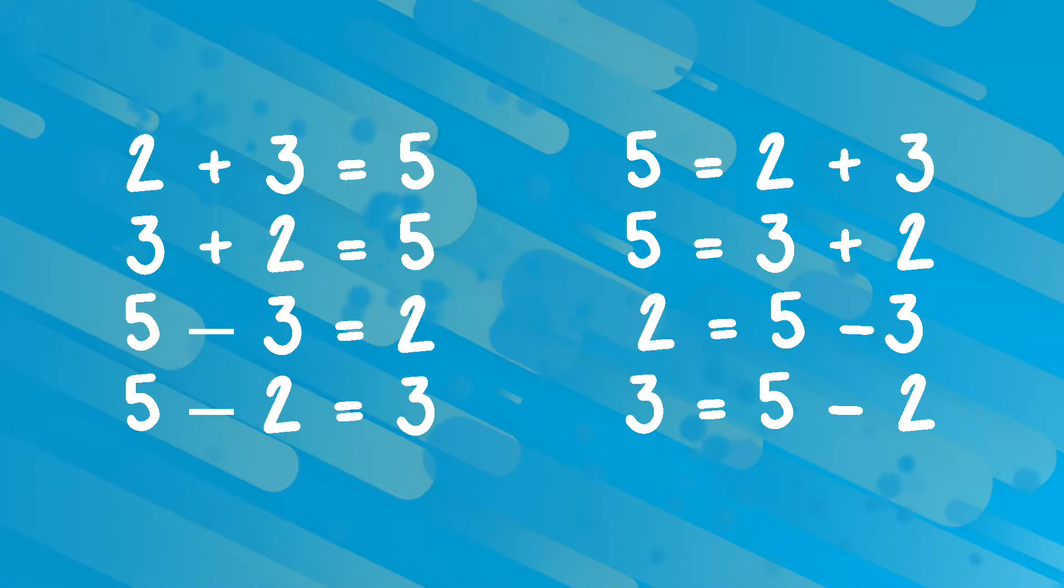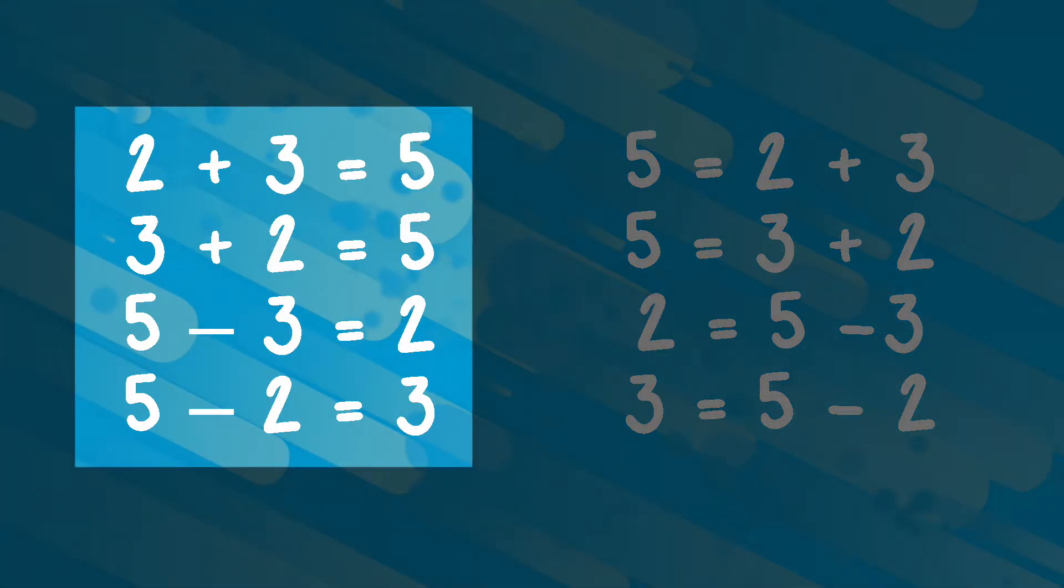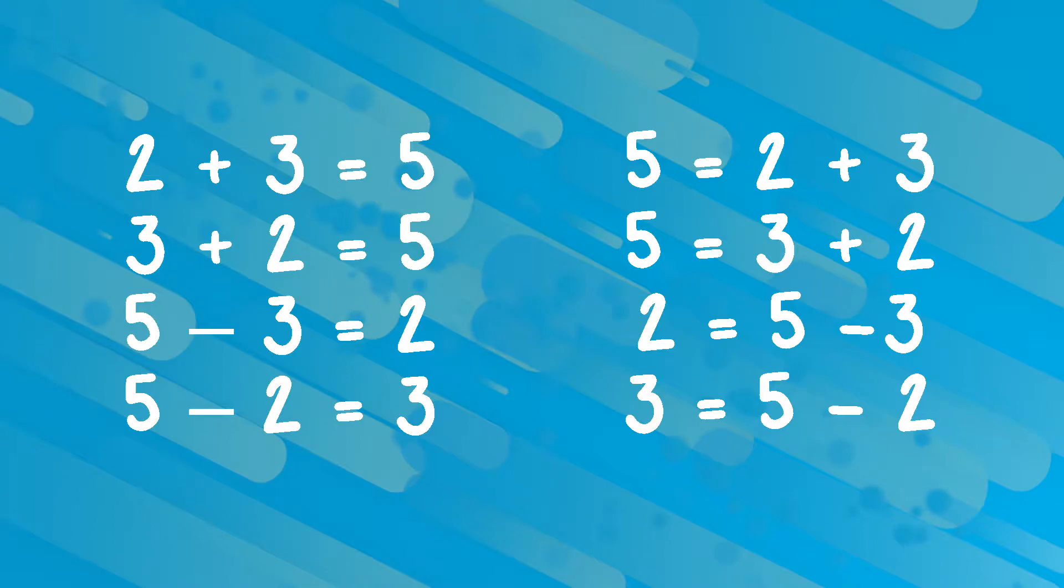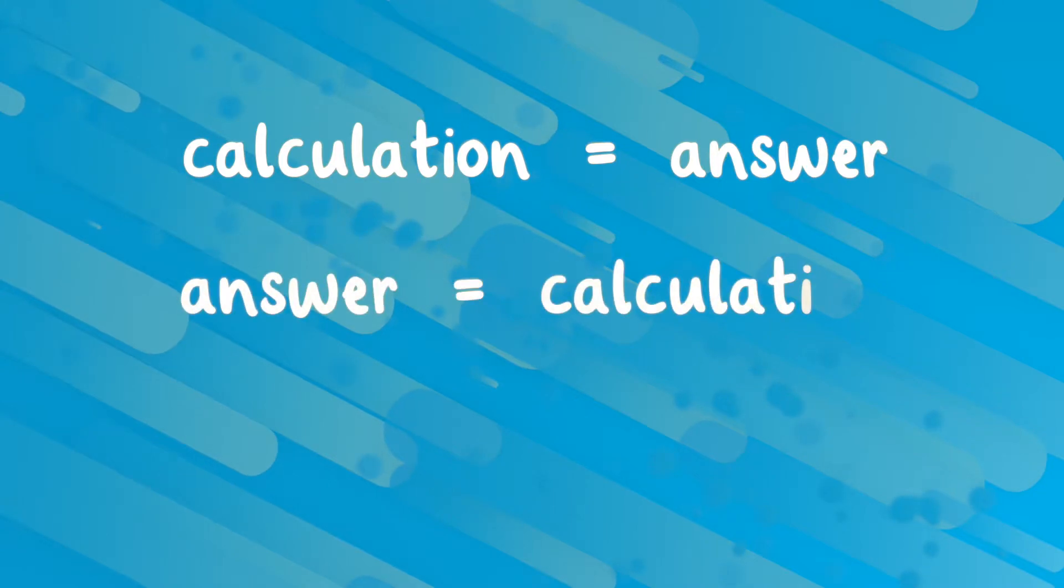You will often see resources that only show four number facts in a fact family, usually where the answer comes after the equal symbol. However, it's important for children to understand that the answer can come at the start or end of a number sentence. As long as the answer is on one side of the equal symbol and the calculation is on the other, then the number sentence can be used.